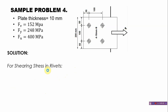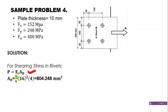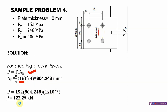For shearing stress in rivets, using F_v × A_rivet: the rivet area = (π/4) × 16² × 4 = 804.248 mm² (using the original 16mm diameter, not 17.6mm). Substituting: P = 152 × 804.248 × 10⁻³ = 122.25 kN.